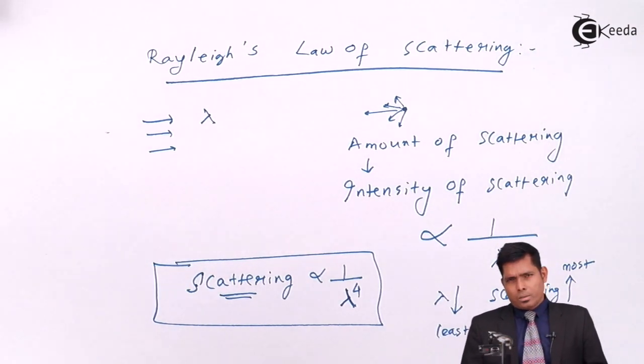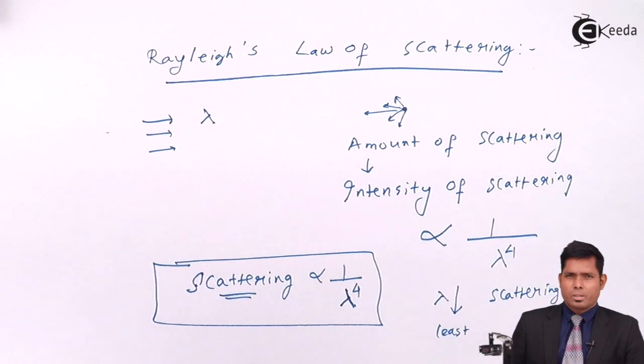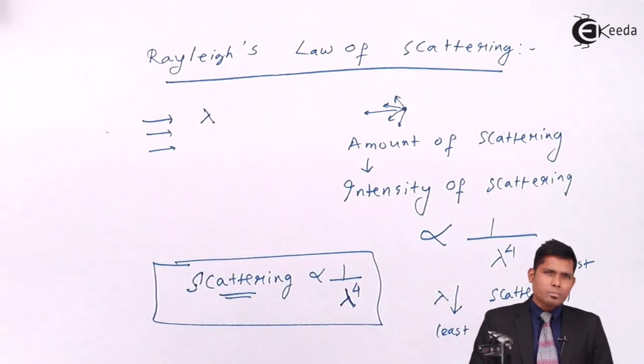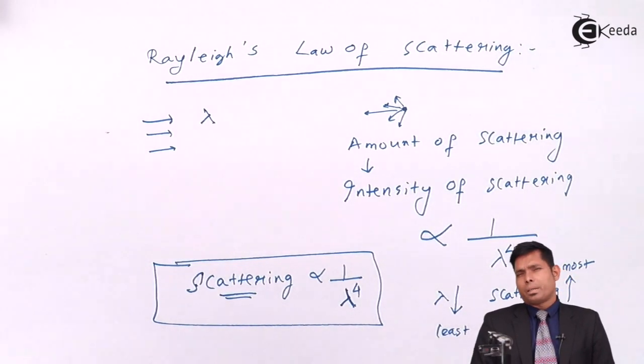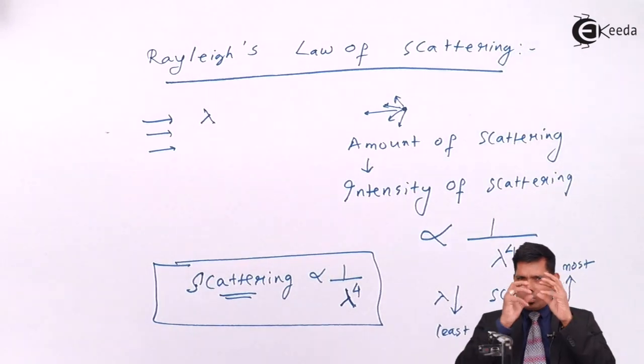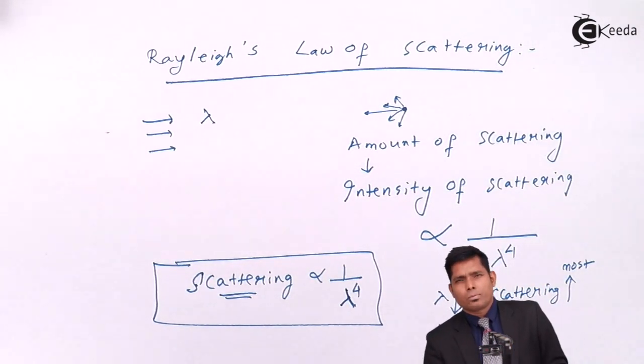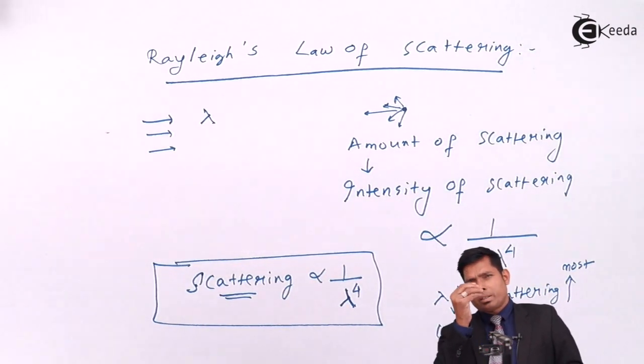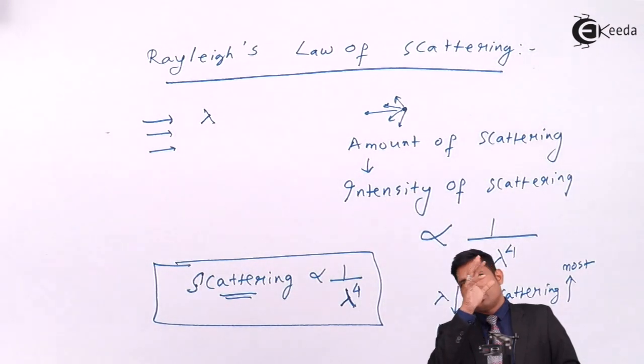The phenomenon of diffraction also occurs when the size of the particle is comparable to the size of the wavelength of the light used. So you can have a diffraction phenomenon also observed when light coming from a source passes through very small, narrow slit, then you can see the diffraction pattern.